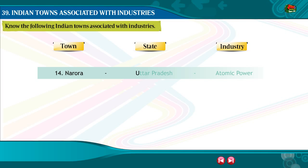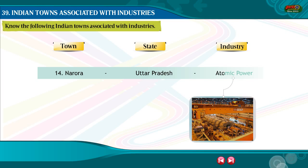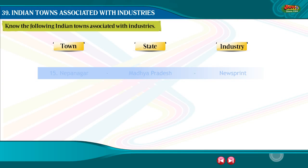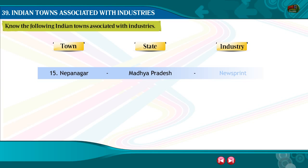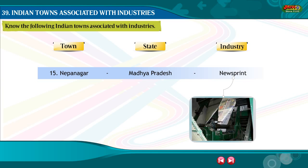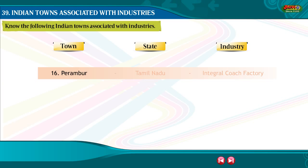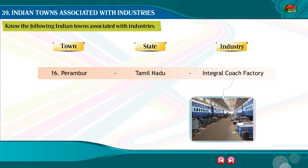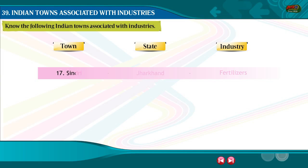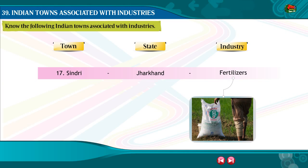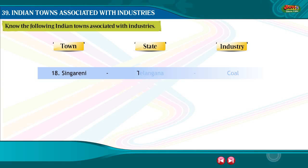15. Nepanagar, Madhya Pradesh — Newsprint. 16. Perambur, Tamil Nadu — Integral Coach Factory. 17. Sindri, Jharkhand — Fertilizers. 18. Singareni, Telangana — Coal.